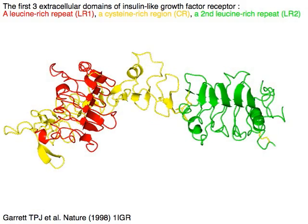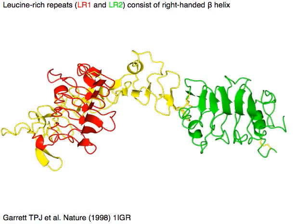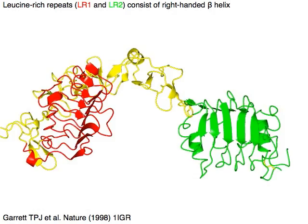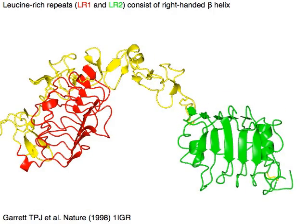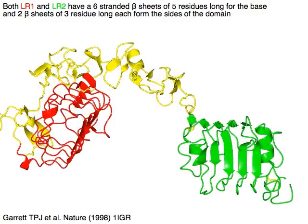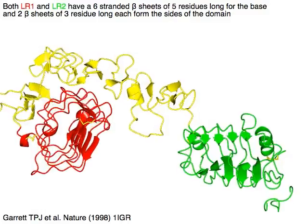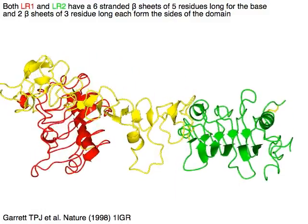Both of the leucine-rich repeats — LR1 in red and LR2 in green — consist of a right-handed beta helix. Both LR1 and LR2 consist of a six-stranded beta sheet of five residues long for the base of the domain, and two beta sheets of three residues long each forming the sides of the domain.